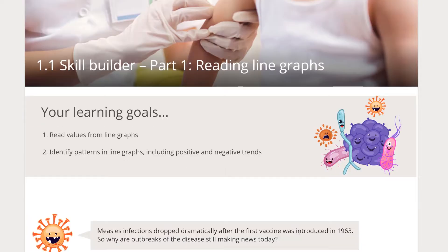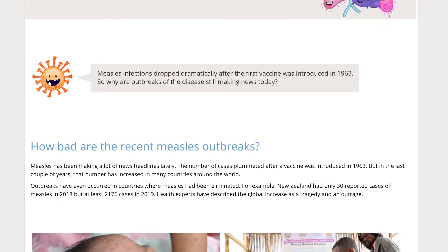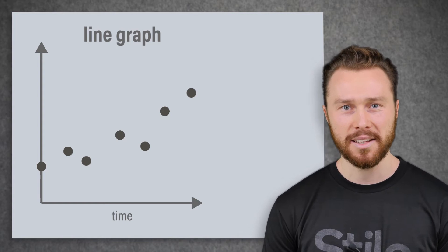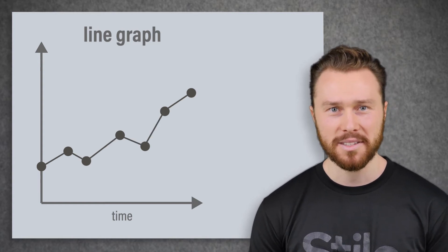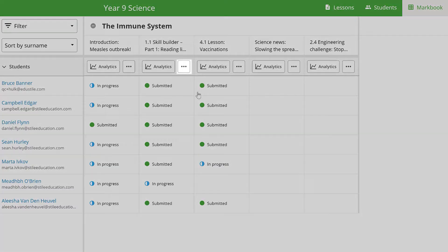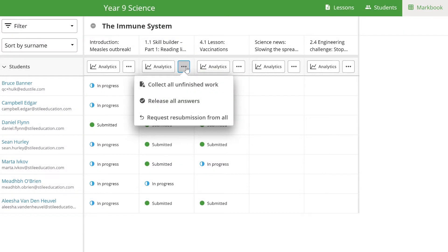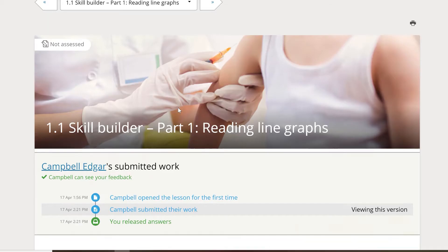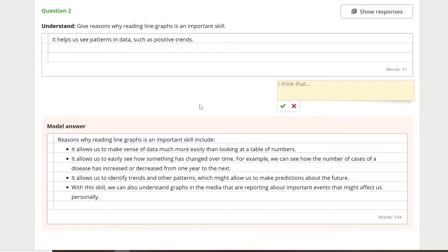Data interpretation skills are integrated throughout the unit. Students learn to read line graphs and calculate percentage changes in the first chapter. With Style's tools for giving timely and specific feedback, including the ability to release model answers to your students, you can be confident that your students will have grasped these new skills.